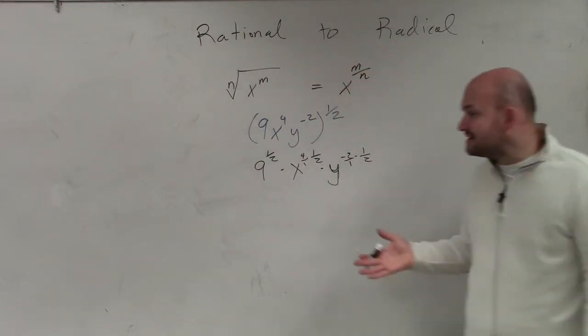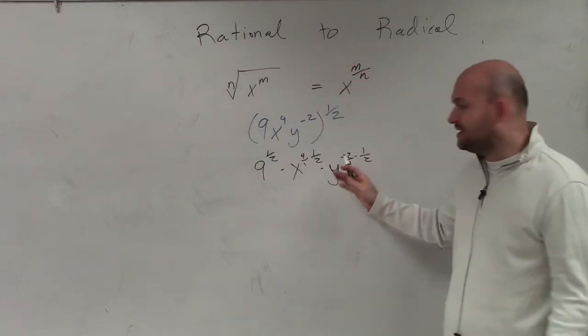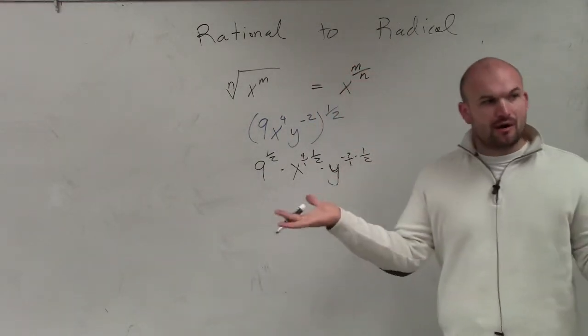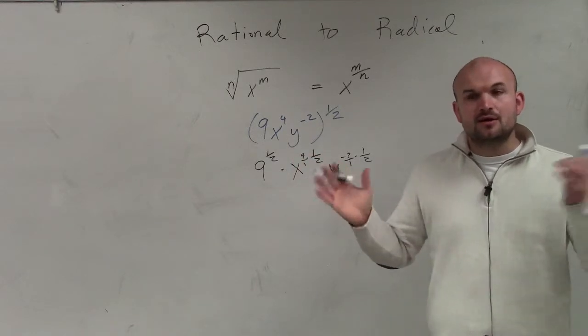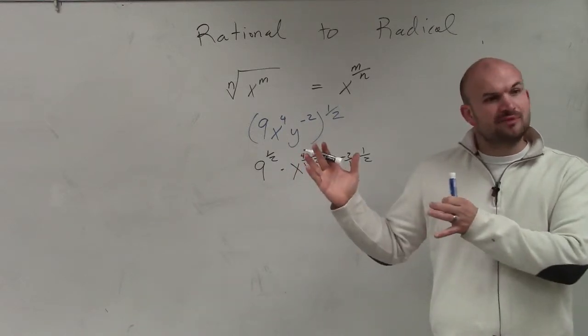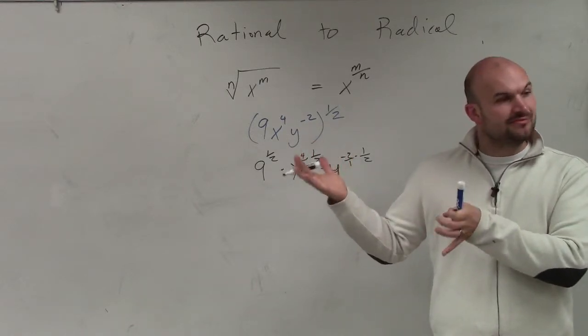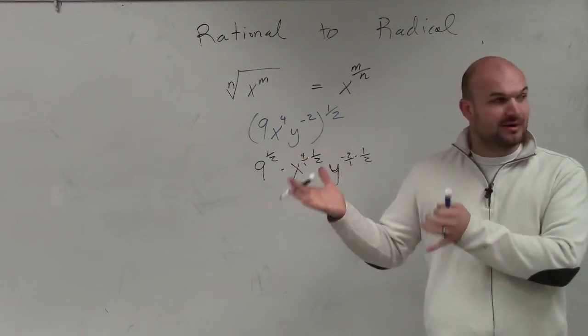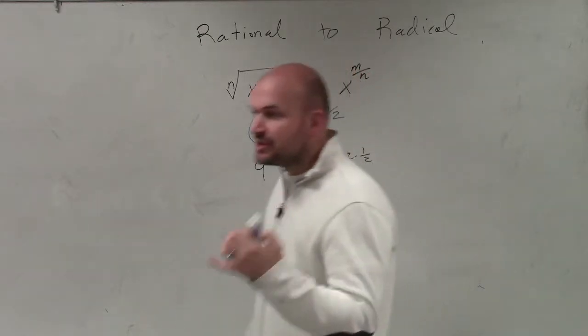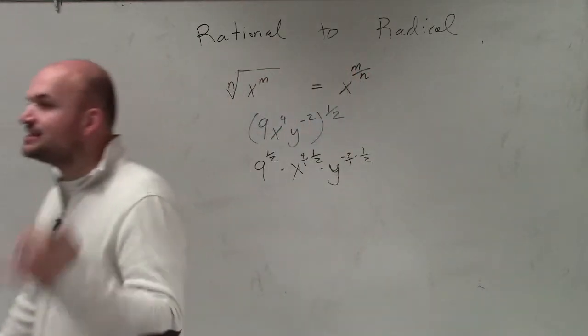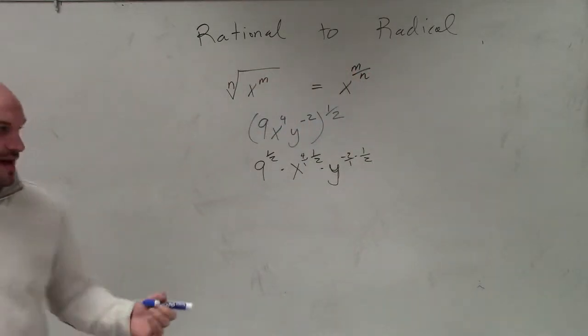The reason why that's helpful is because now you can see, oh, I'm really just multiplying two fractions, which is important because multiplying fractions is simple. You're not cross-multiplying — you're just simply multiplying numerator times numerator, denominator times denominator.